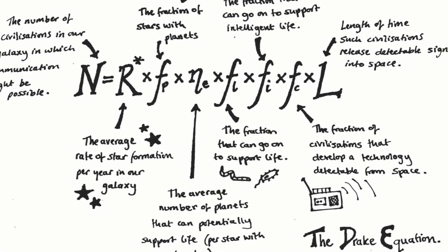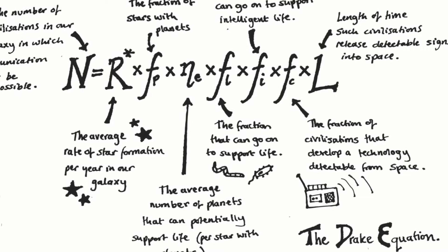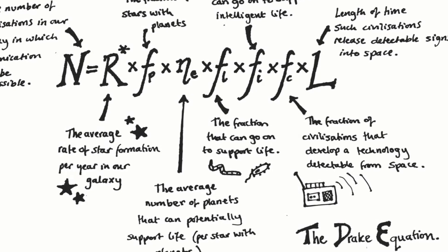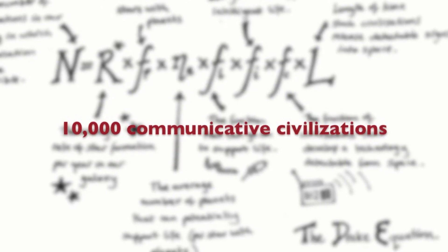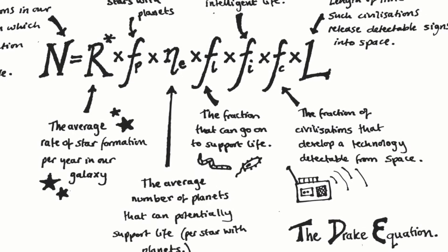Later, in 1961, Frank Drake added to Fermi's query by proposing an equation about the probability of advanced alien interaction, guesstimating that there may be 10,000 or so communicative civilizations in the Milky Way. In contrast, though, in 1975, Michael H. Hart,